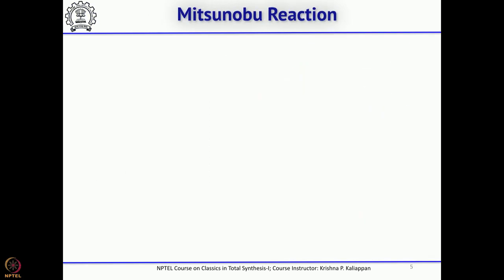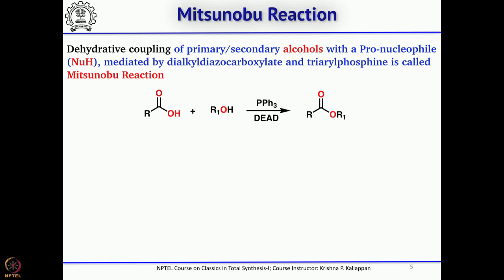The key reactions are: one is Birch reduction, which we have already discussed. The other key reaction used is the Mitsunobu reaction. The Mitsunobu reaction is another method for making an ester — you start with the carboxylic acid and then treat with alcohol in the presence of triphenylphosphine and diethyl azodicarboxylate (DEAD), to form the corresponding ester.